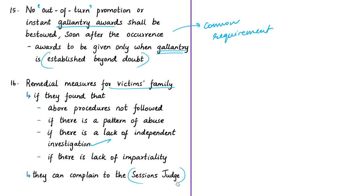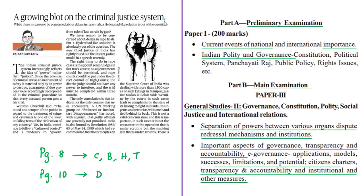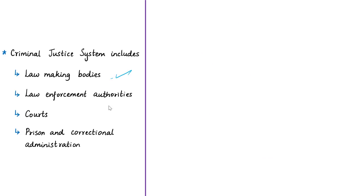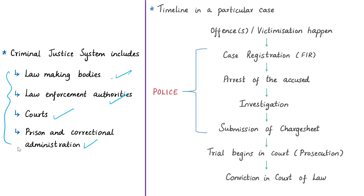The next discussion is based on an editorial related to extrajudicial killings and the criminal justice system (CJS). The CJS includes law-making bodies such as Parliament and state legislatures, law enforcement authorities such as police, courts of law, and prison and correctional administration. The state of criminal activities in society depends on the efficient functioning of all these stakeholders.